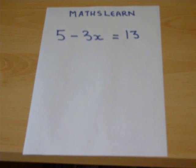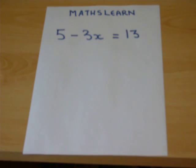To solve 5 minus 3x equals 13, we must get the x's to one side, the left normally, and the numbers to the other side.